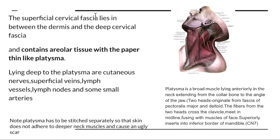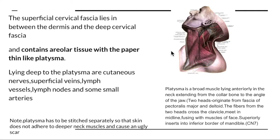The superficial fascia lies between the dermis and the deep cervical fascia and contains areolar tissue with a paper-thin platysma. The platysma is a muscle of facial expression running anterolaterally — it arises from the collar bone extending to the angle of the jaw.